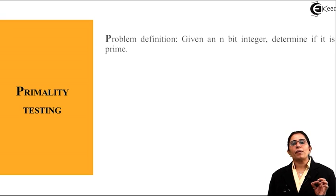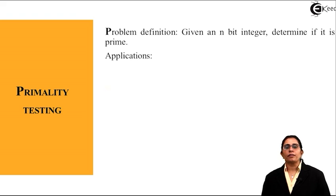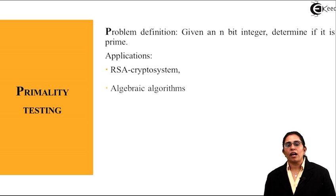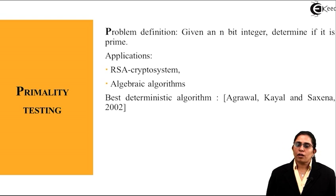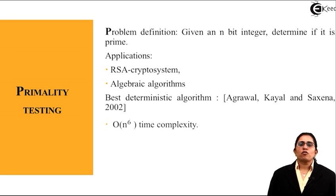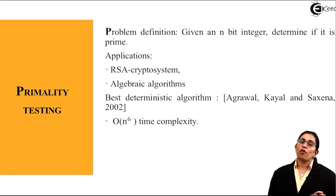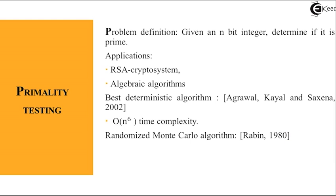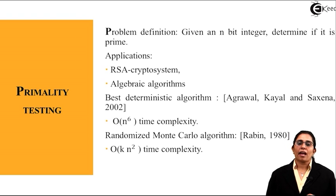Given an n bit integer, determine whether it is prime or not. The applications are RSA cryptosystem and algebraic algorithms. The best deterministic algorithm is Agrawal, Kayal and Saxena in 2002 with complexity of big O(N raised to the power of 6). The randomized Monte Carlo algorithm by Rabin in 1980 gives us time complexity of big O(K N square).